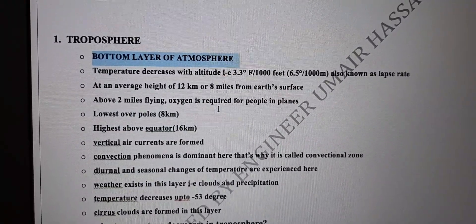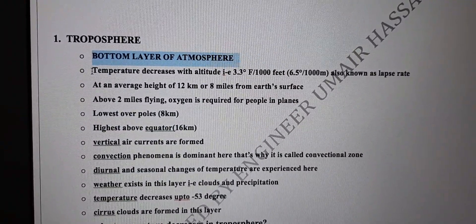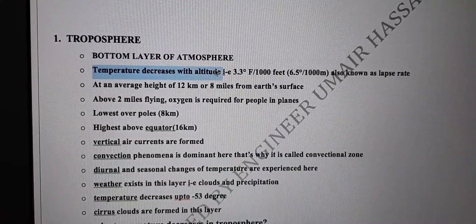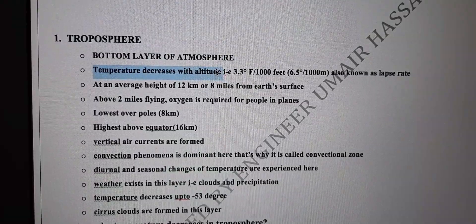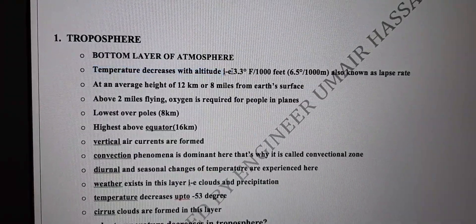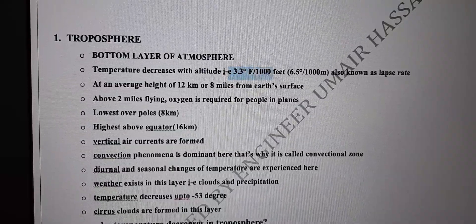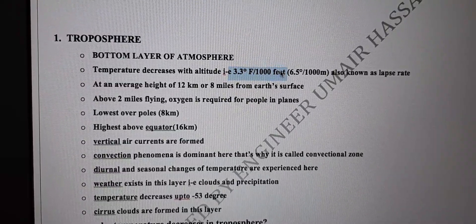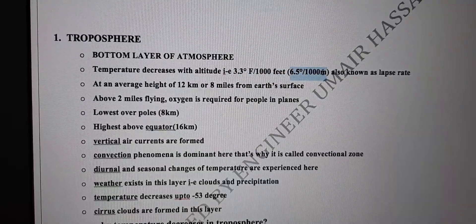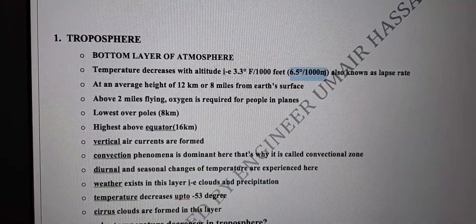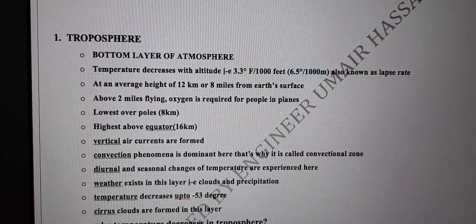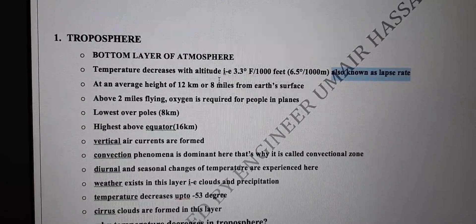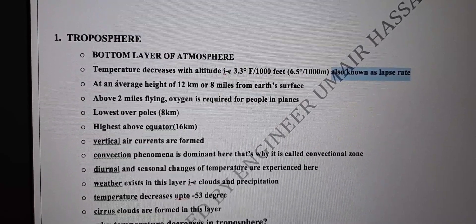There are quite a few questions from this topic. In this layer, temperature decreases with altitude. As you go to higher altitude, temperature decreases, and that rate is 3.3 degrees Fahrenheit per thousand feet, or 6.5 degrees centigrade per thousand meters. This rate of decrease is known as the lapse rate.